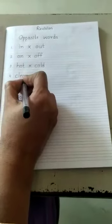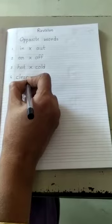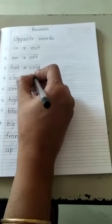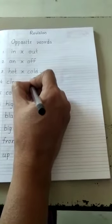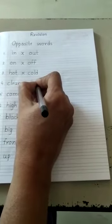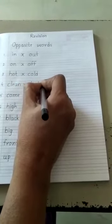Next one is Clean. C L E A N. Clean. Opposite word is Dirty. D I R T Y.